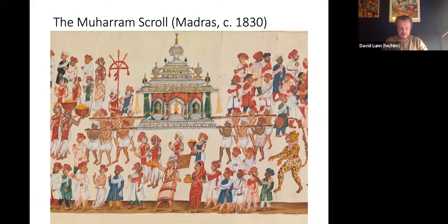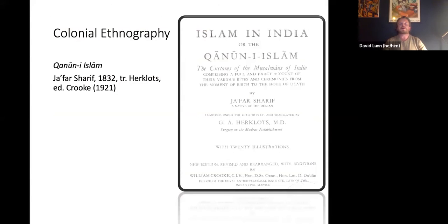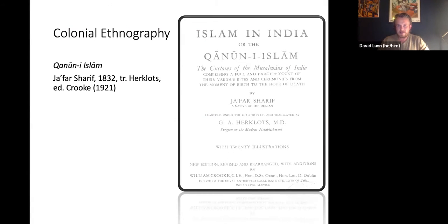In attempting to understand this, we can turn to a written colonial ethnography — a superlatively detailed text called the Qanun-i-Islam, meaning the customs of Islam. This was written, we are told in Urdu in 1832 by a gentleman called Jafar Sharif, and in the language of the frontispiece: composed under the direction of and translated by Herklotz, who was a surgeon in the Madras establishment. So we're still in this region of Southeast India, of Madras, with twenty illustrations and all the rest of it.